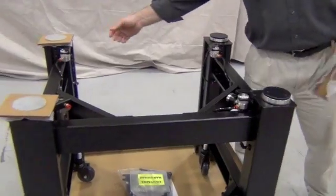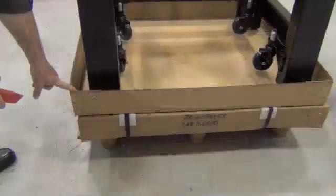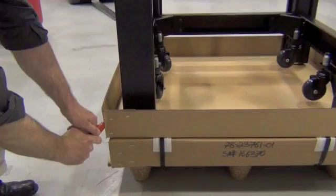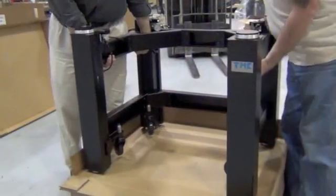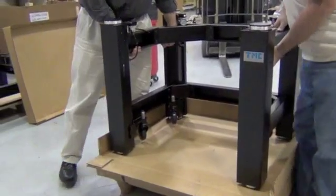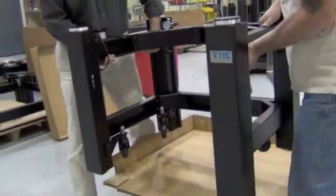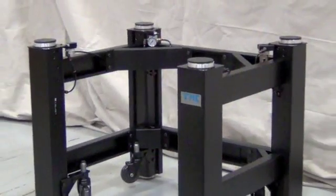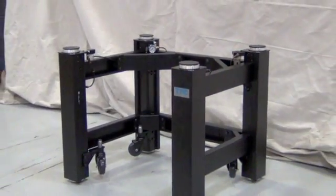For smaller frames, two people can lift it out of the box. To make it easier to lift, we are cutting back the cardboard box. Place the leg frame in the position it's going to sit in the lab. Once the top is in place, it is much more difficult to move.